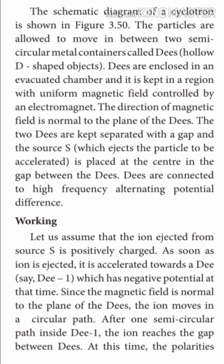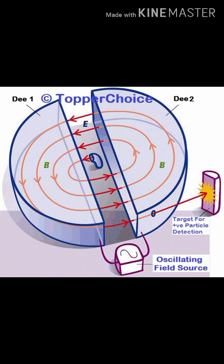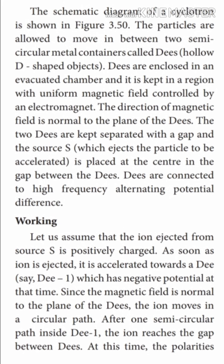The two Ds are kept separated with a gap, and the source S is placed at the center in the gap between the Ds. The Ds are connected with a high frequency alternating potential difference.